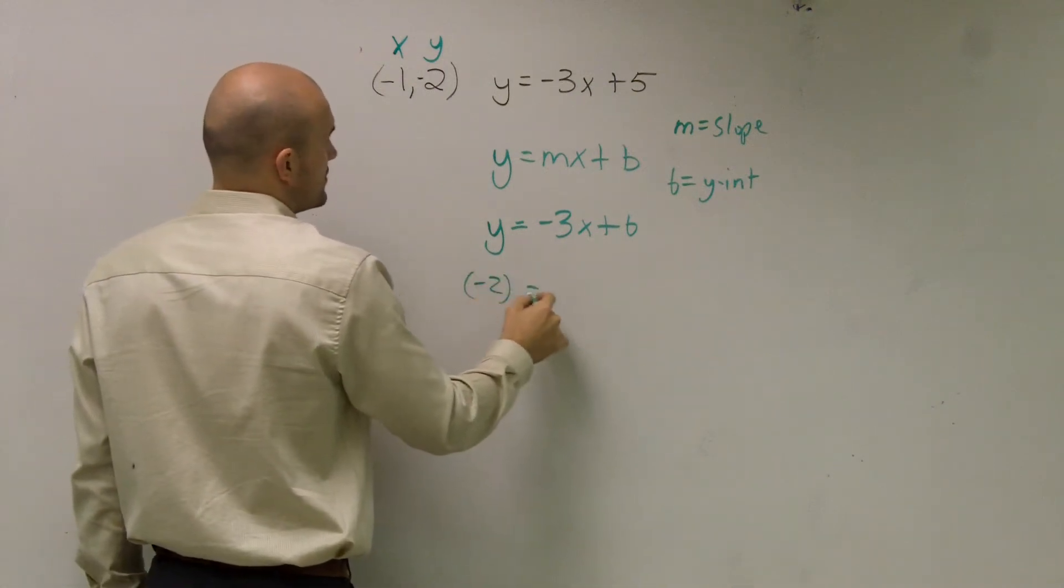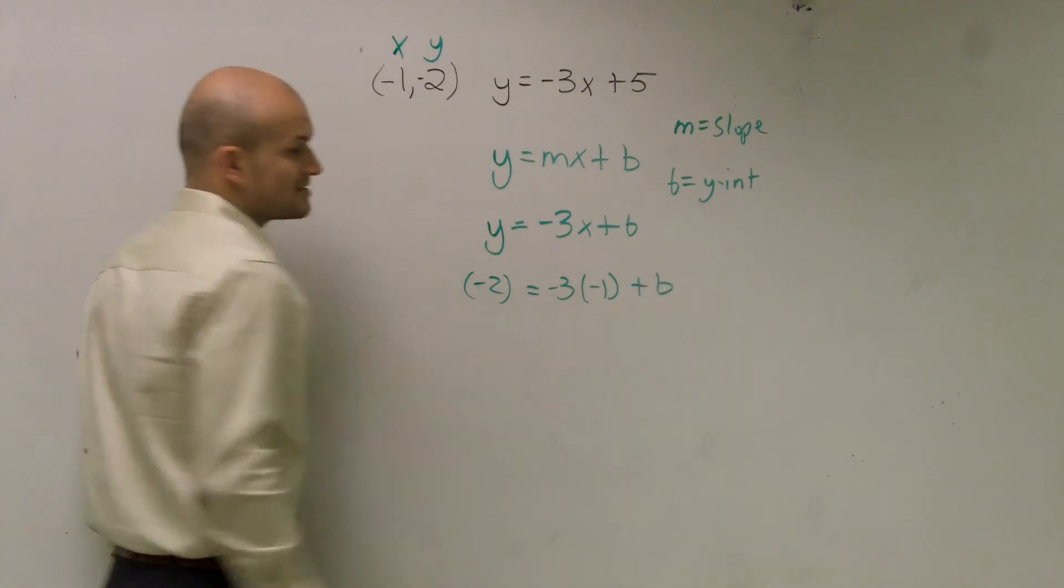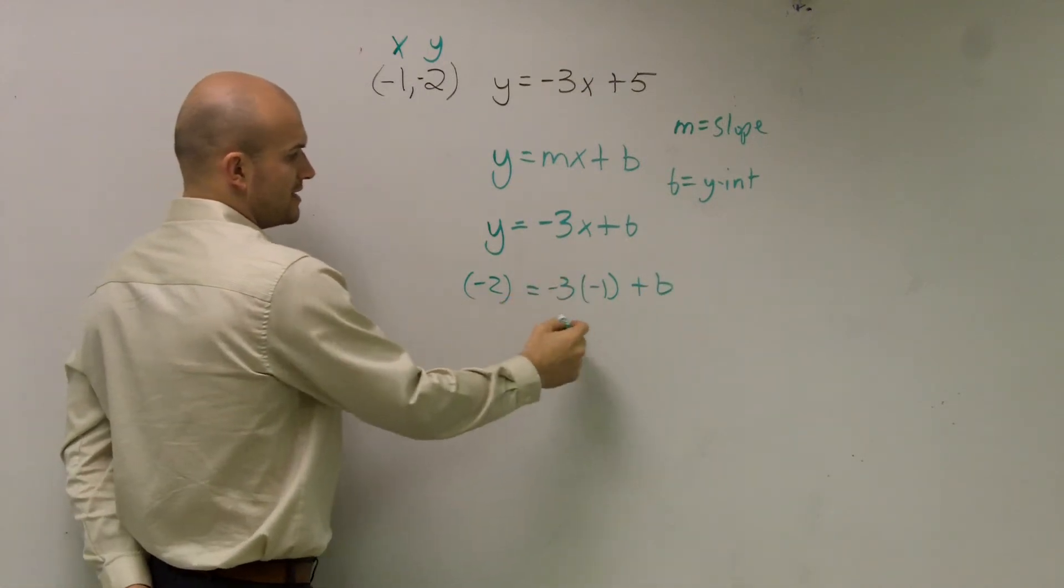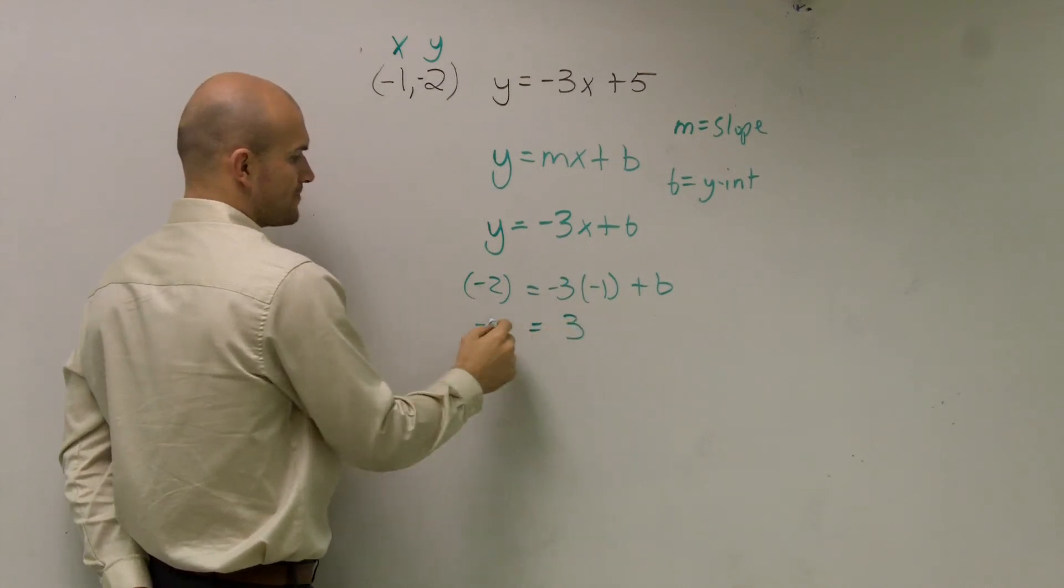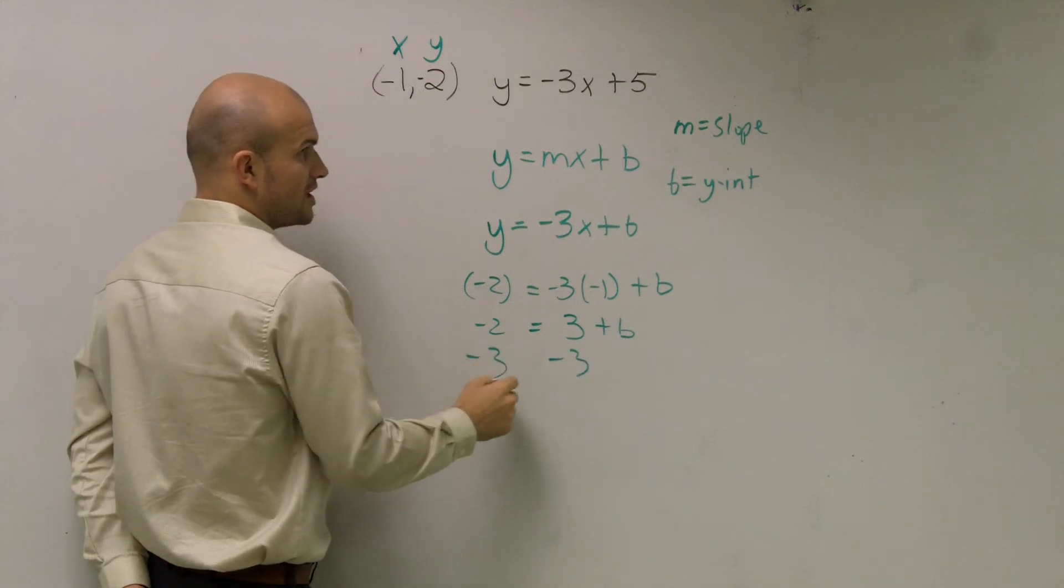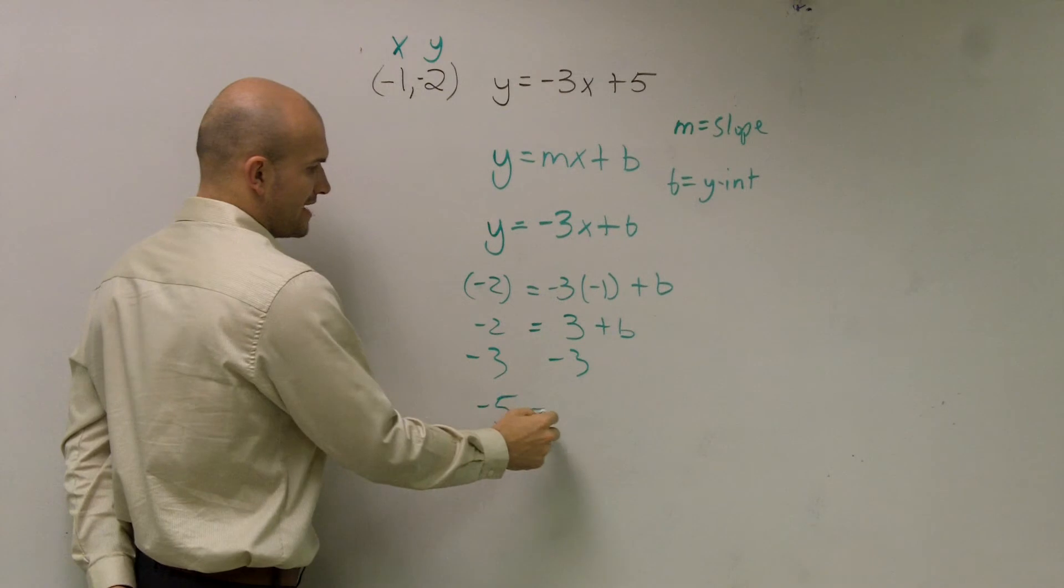I'll plug them in. Negative 2 equals negative 3 times negative 1 plus b, because I still don't know what the y-intercept is. Negative 3 times negative 1 is positive 3. Therefore, to solve for b, I subtract 3 on both sides, and I get negative 5 equals b.